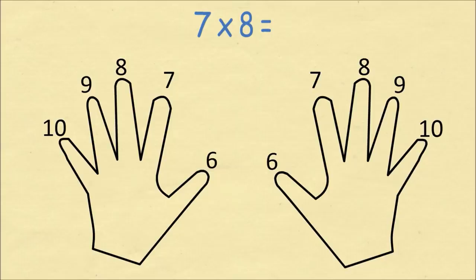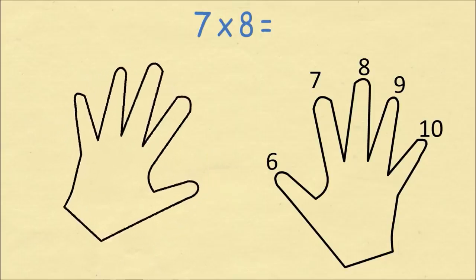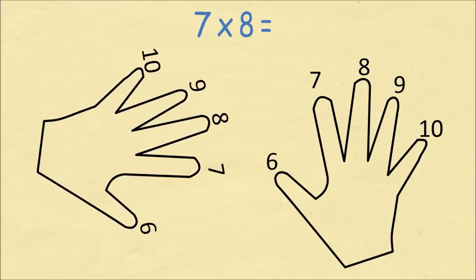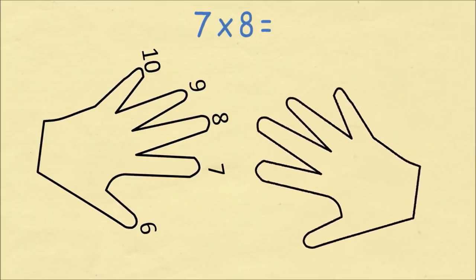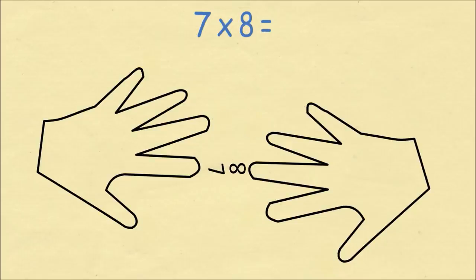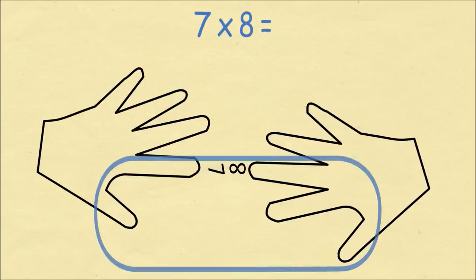Let's do the problem of 7 times 8. We'll rotate our left hand so we have one finger being 7, and we'll rotate our right hand to line up the number 8. Now we'll count the numbers of fingers that are below the two fingers which are touching. We have two fingers on the left hand and three fingers on the right hand, which is a total of five fingers. This becomes the tens digit of our answer.